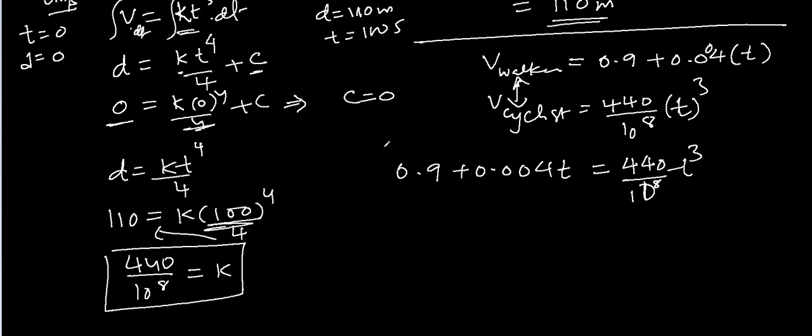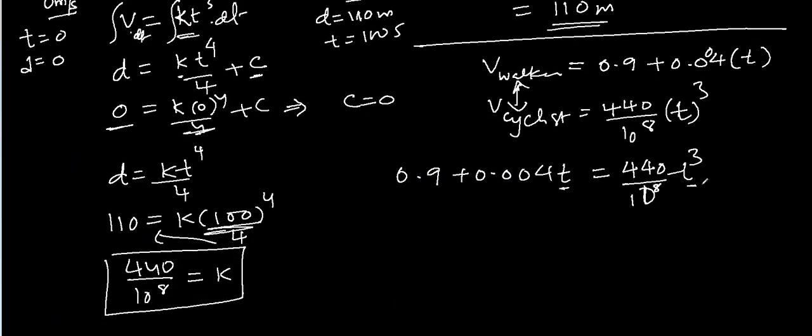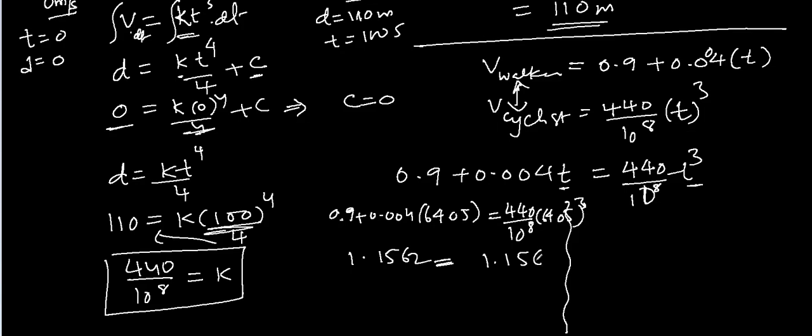From here there are two ways. Substitute 64.05. That's what they're saying. Substitute in place of T, 64.05 in both sides. So let me do both ways. 0.9 plus 0.004 times 64.05, this must be equal to 440 over 10 to the power 8 times 64.05 cube. That I'm showing that this will work. And both of them give me 1.1562. 1.1562, and I've shown that yes, at 64.05 seconds their velocities are equal.